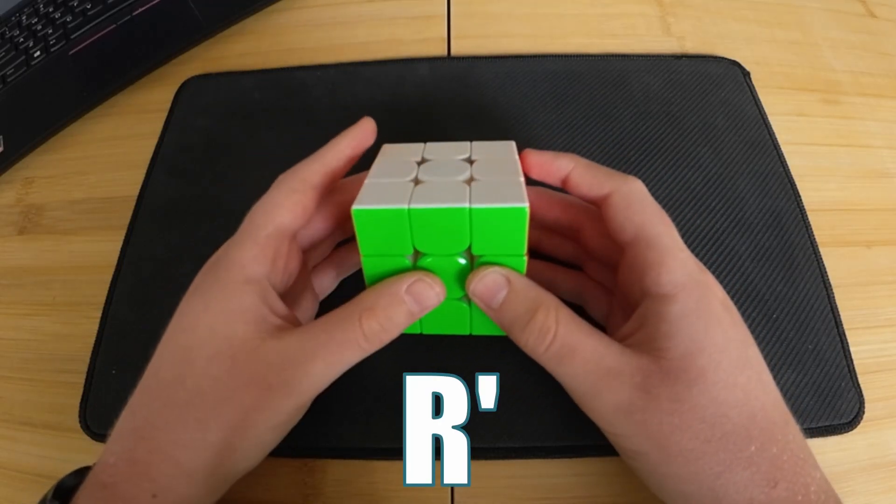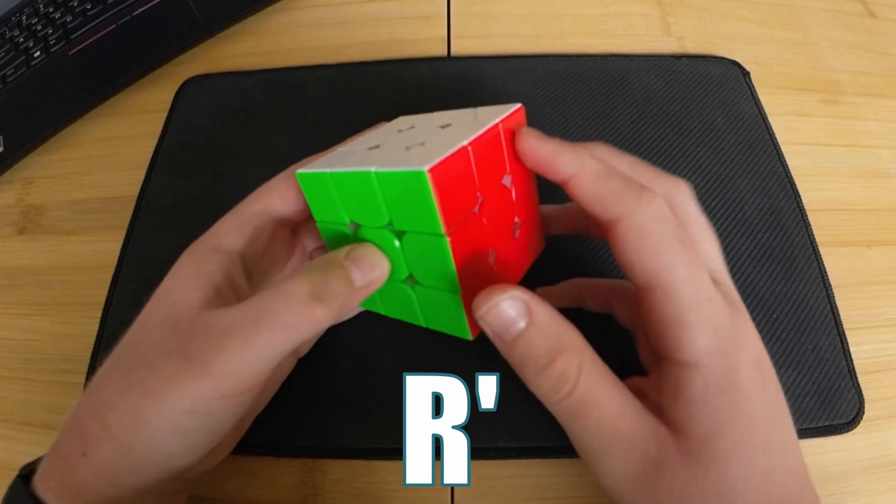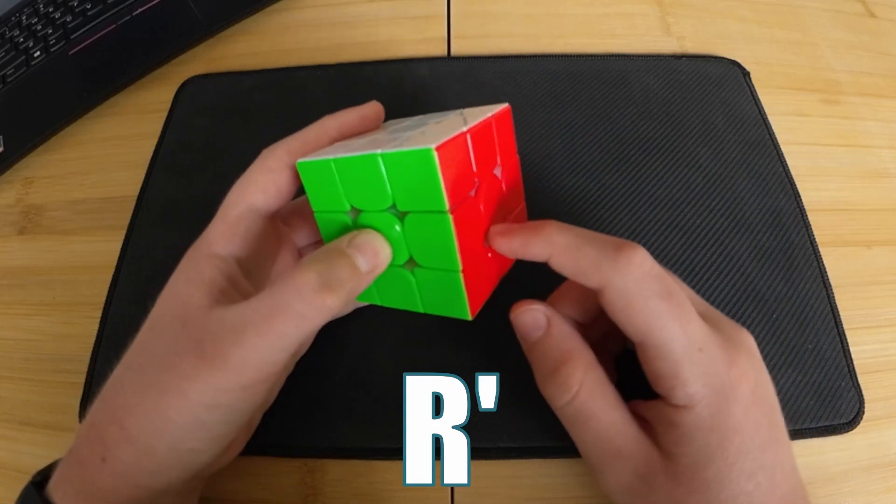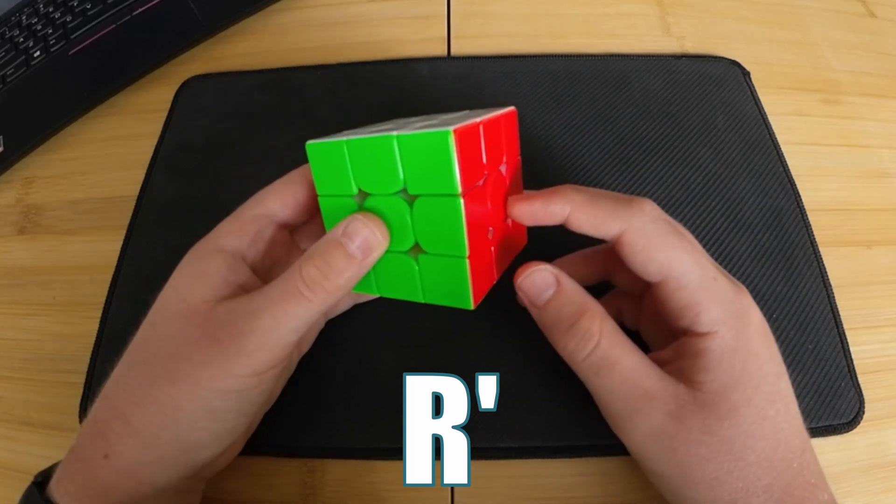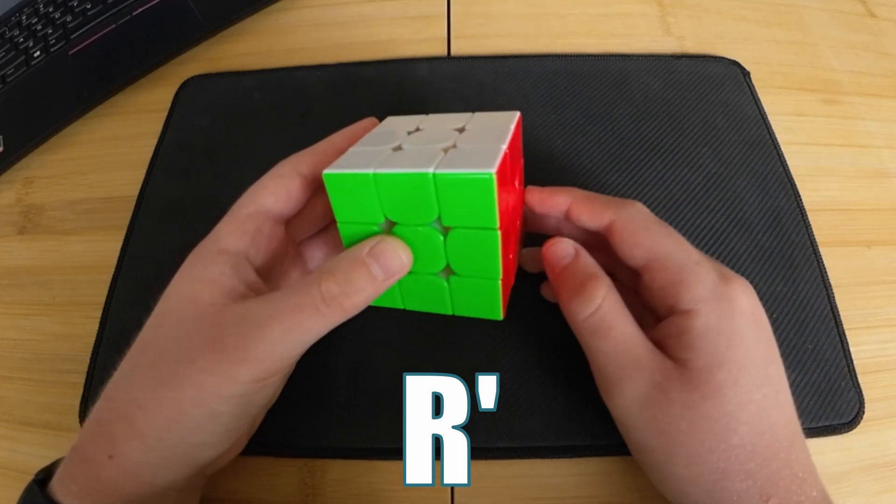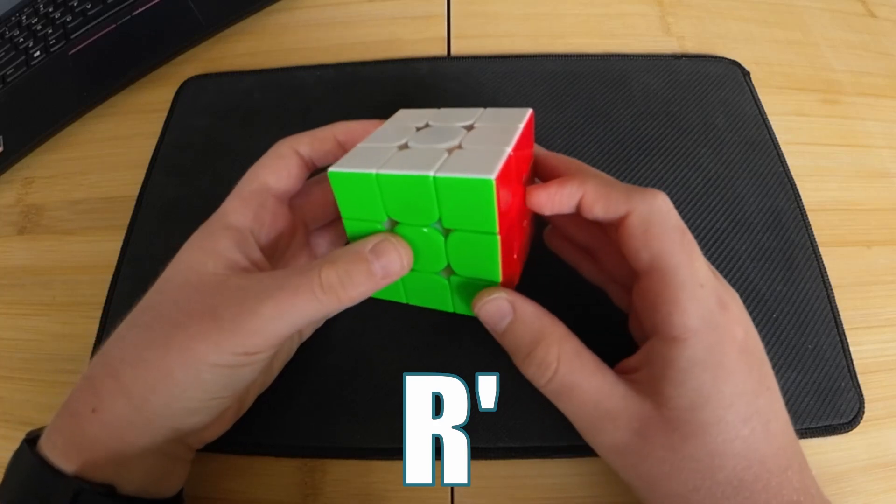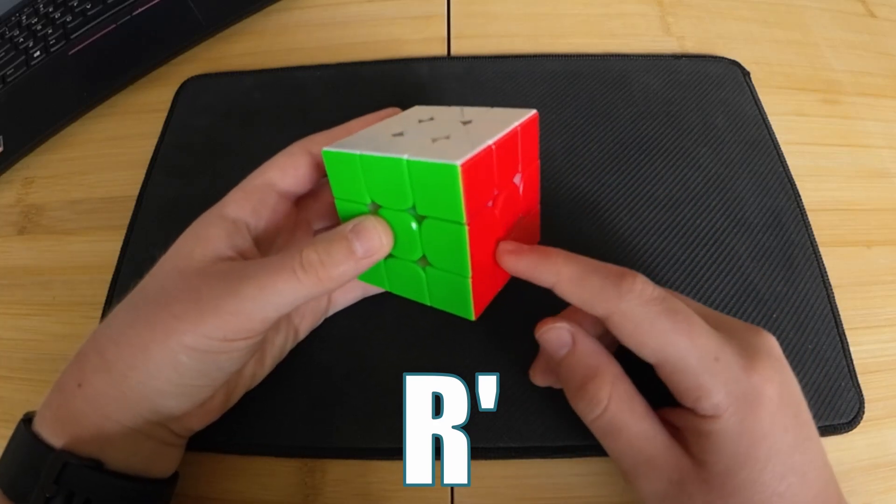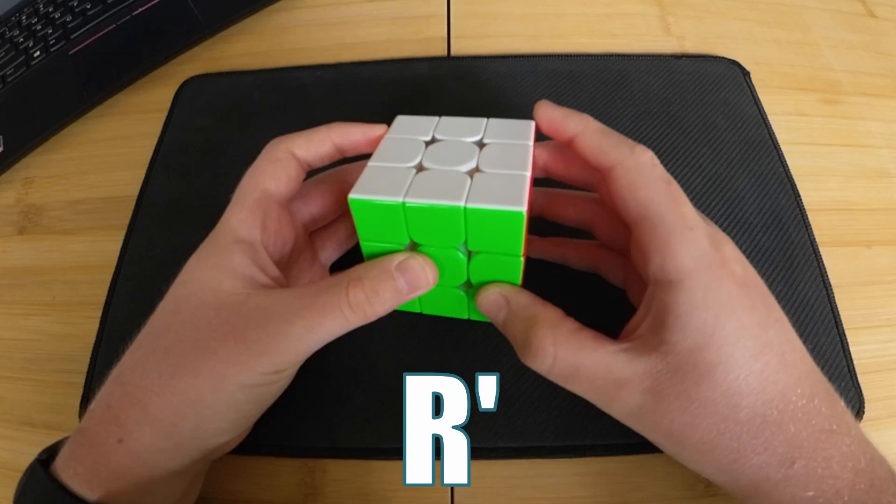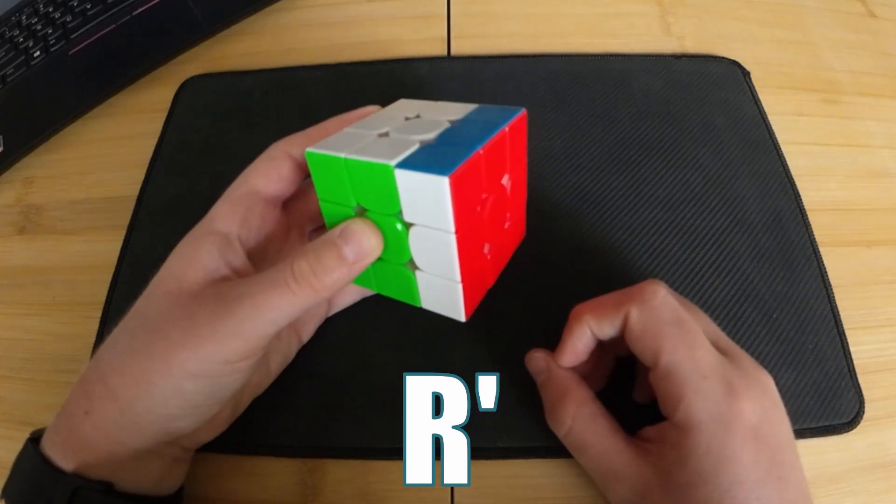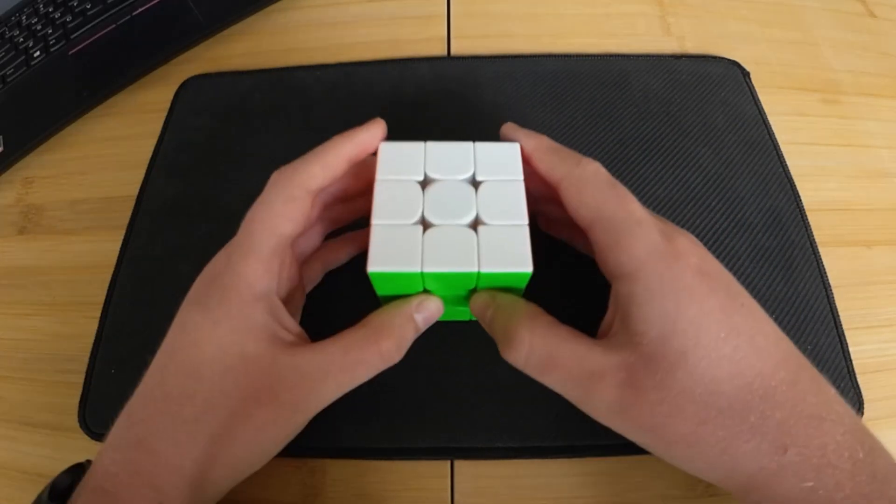On screen, you'll see R', which will be R for the right side. Since there is an apostrophe or a prime next to it, it's going to go counterclockwise. So if you imagine if this was on the front, then you want it to go counterclockwise since there is the prime. So we can do it like this, and that's R'.